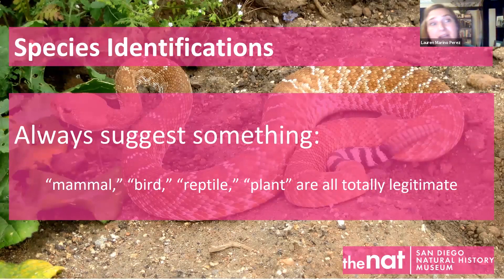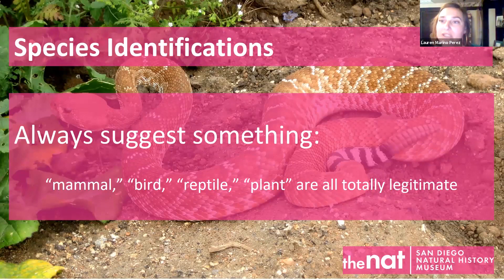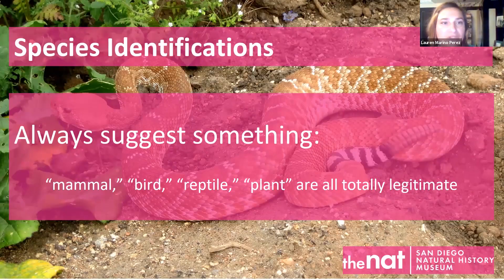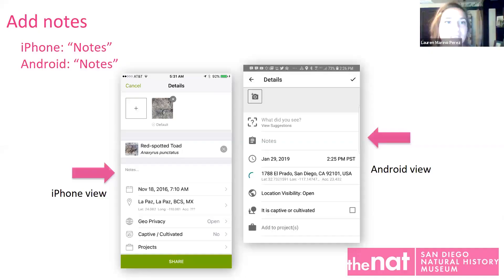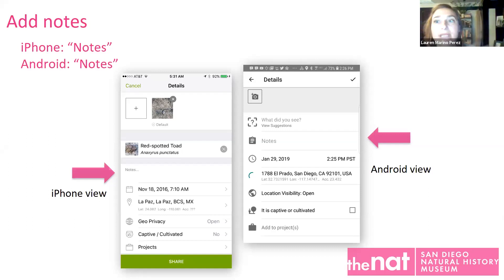If you start identifying things and you realize you like identifying while you're observing, you can go in and identify for other people too — it's totally peer to peer. As long as two people agree on an ID, it becomes research grade and researchers can pull that into their projects. There are some really interesting conversations between people disagreeing on identification. You can add notes — this might be a fun place to add things like 'found in shoe' or 'in my bathroom,' which gives people clues and also acts as your own personal journal.